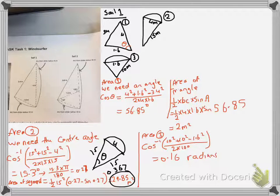So now I can find the area of the segment straight away: half radius square times 0.16 minus sine 0.16, and the answer for that is 0.03.